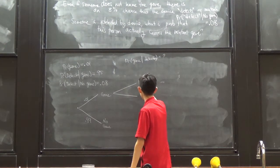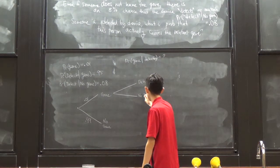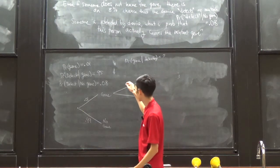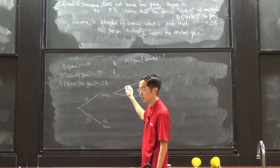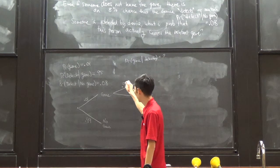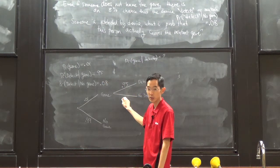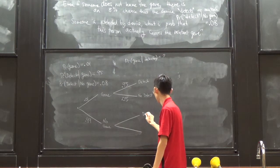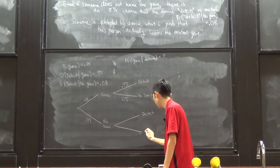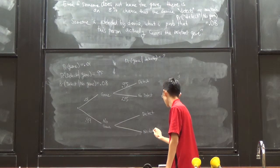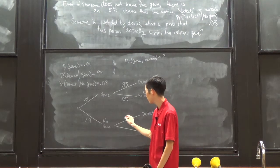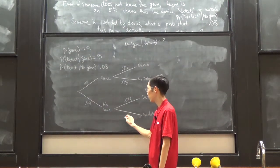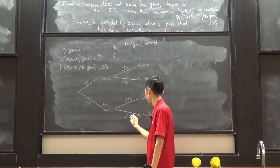Those who have the gene can be detected, and they might also not be detected. The probability that someone who carries the gene is detected is 0.95, and the probability of not being detected would then be 0.05. For those without the gene, the probability of being falsely detected is 0.08, and the probability of not being detected is 0.92.